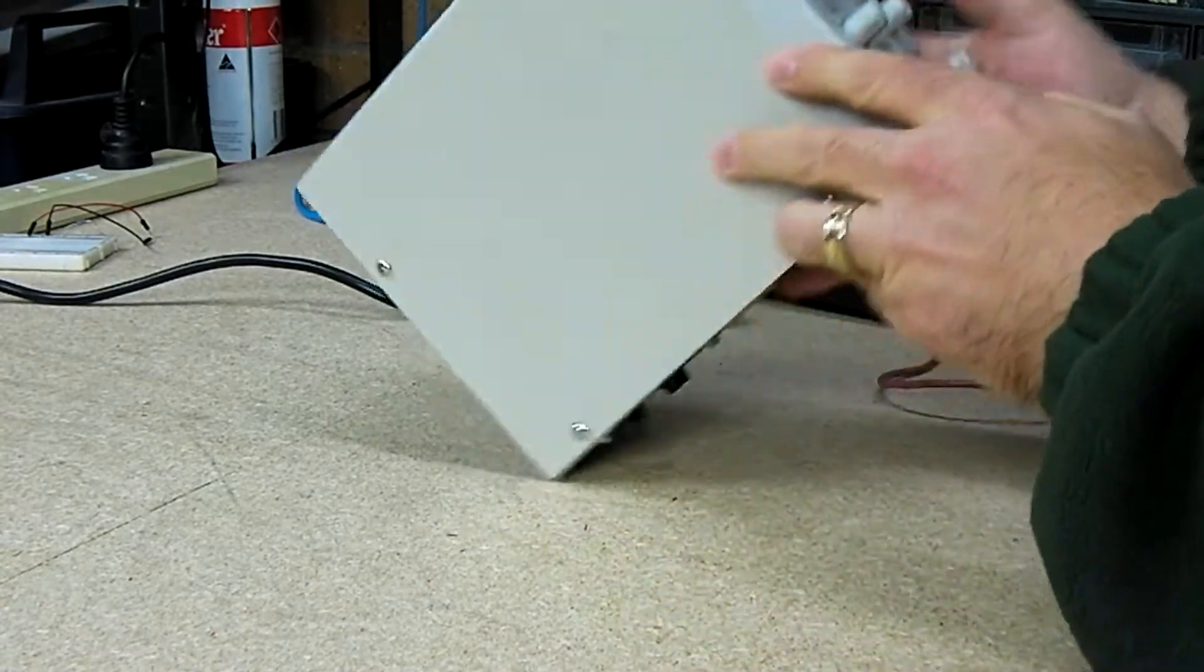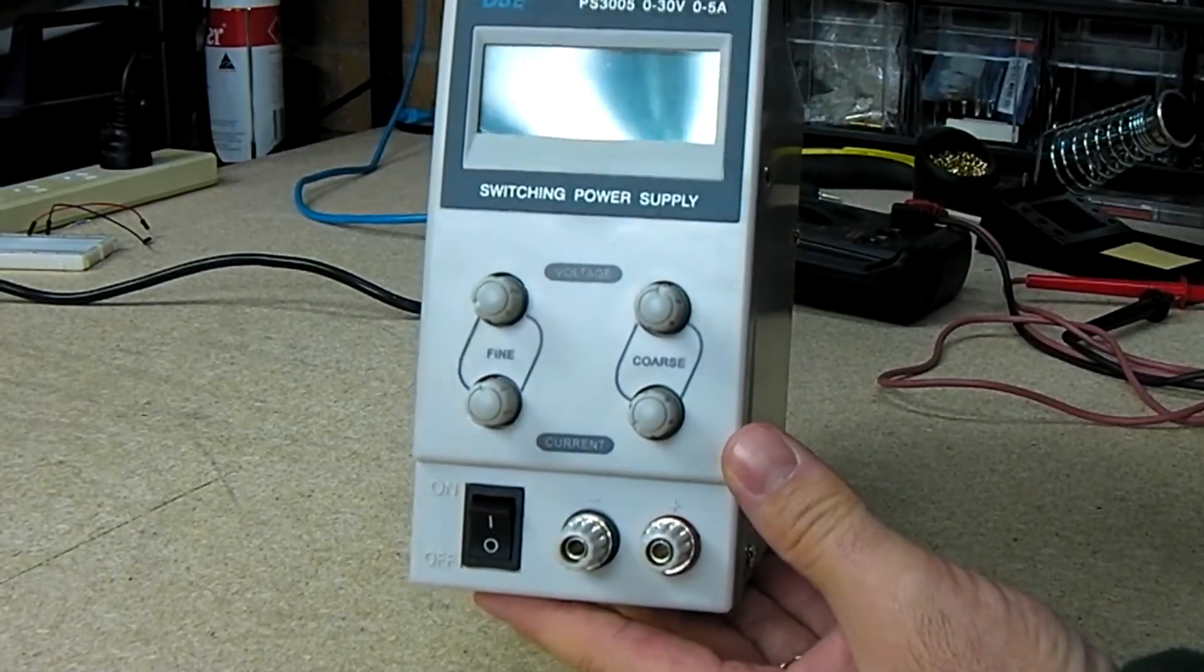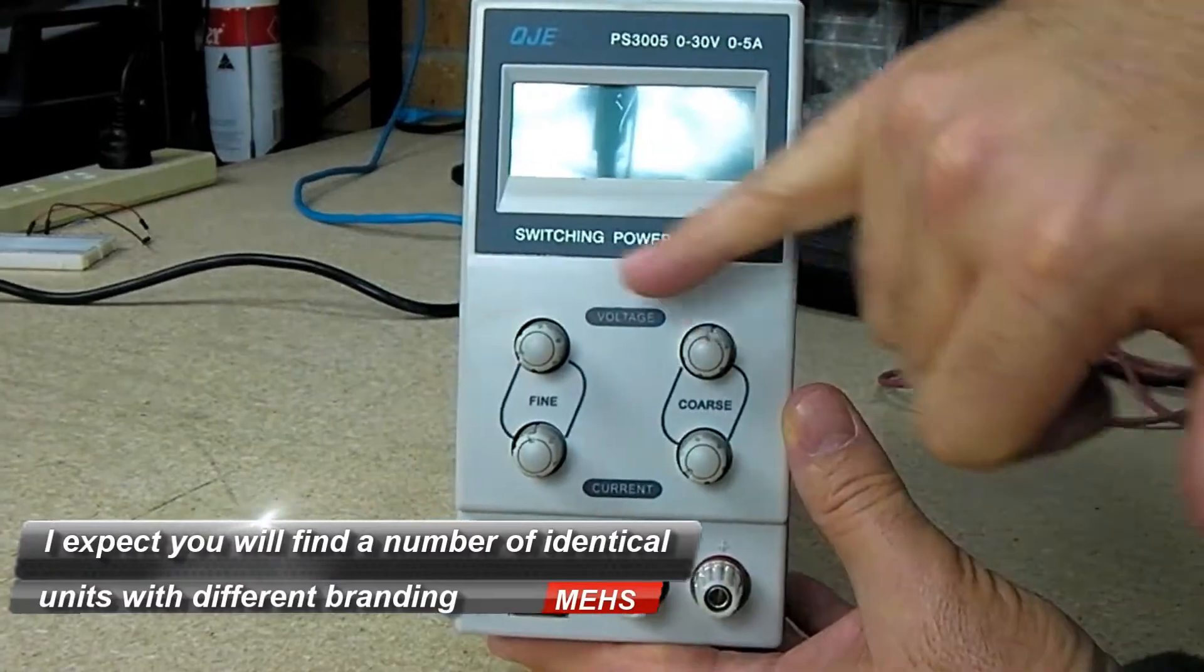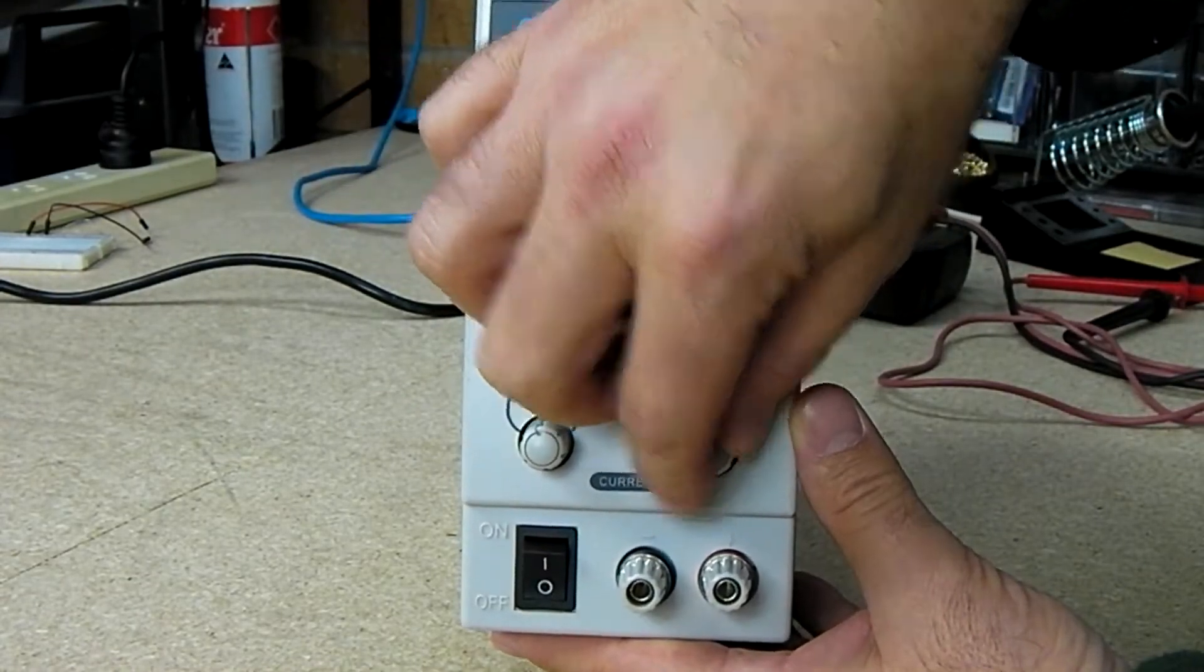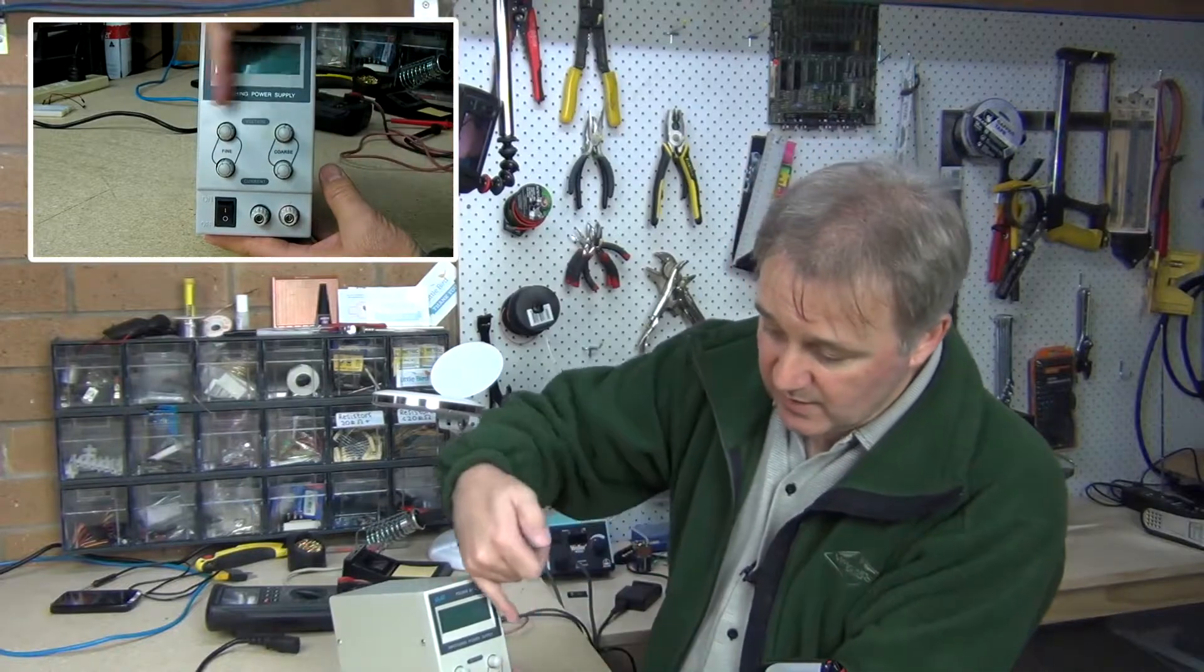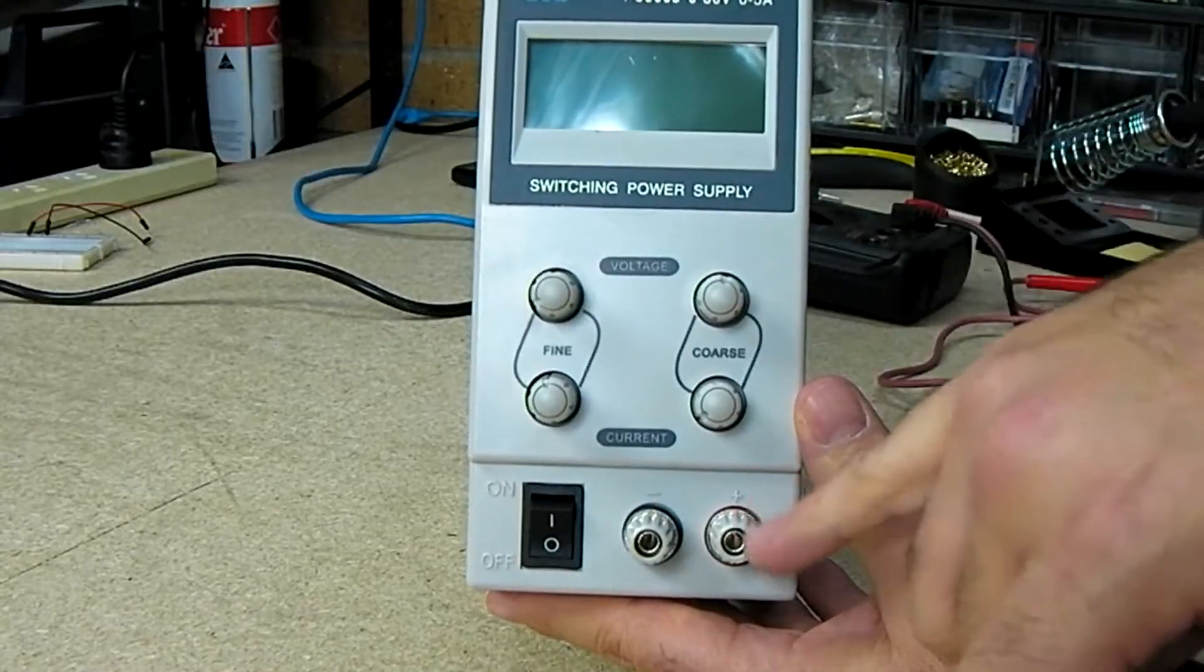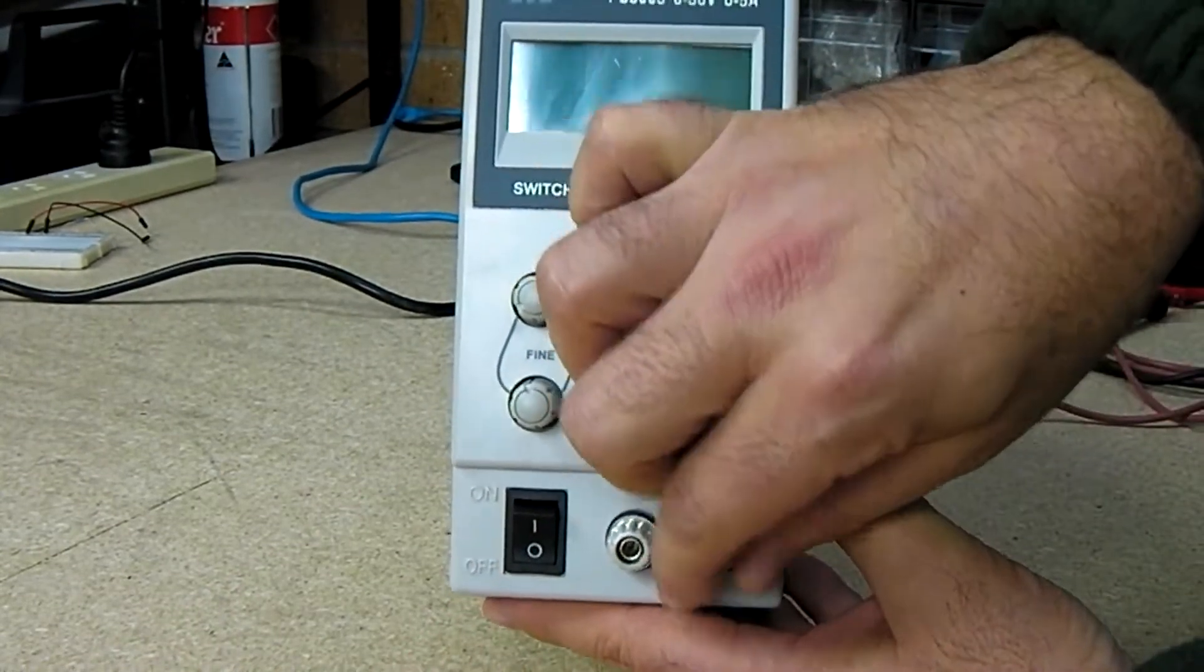Going around the device on the front, you can see a standard LCD display. This is a QJE branded one, but you'll find many different branded versions. Four controls: voltage coarse adjustment and fine adjustment, and current coarse adjustment and fine adjustment. I did find these to be around the wrong way. I would have preferred my voltage down one side and amperage down the other, rather than going across this way for voltage and that way for current, but it's just personal preference.